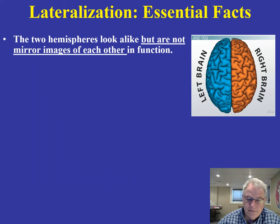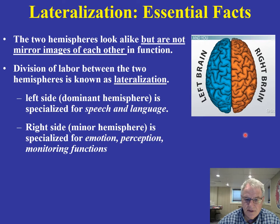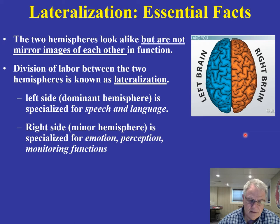Some essential facts regarding lateralization: the two hemispheres look like they are identical to one another, but they are not. They are very different in terms of the basic functions they subserve — there's a division of labor. The left side, typically the dominant hemisphere, is where speech and language are specialized for a right-handed person, and most of us are right-handed. The right hemisphere, the minor hemisphere, is typically specialized for things like emotion, perception, and monitoring functions.